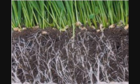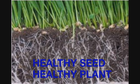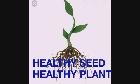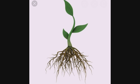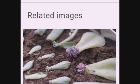When a healthy seed gets the right conditions — the right amount of air, water, and warmth — it grows into a baby plant called a seedling. The process by which a seed grows into a new plant is called germination.